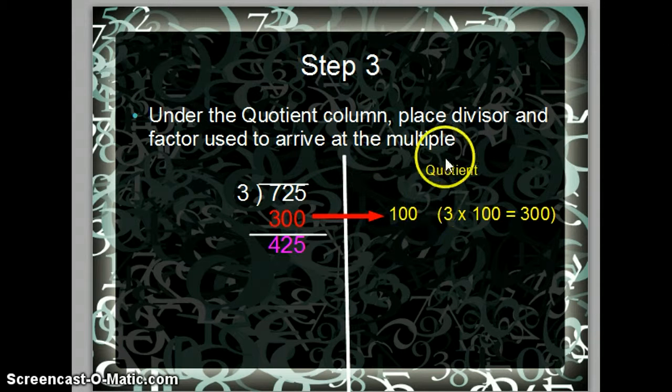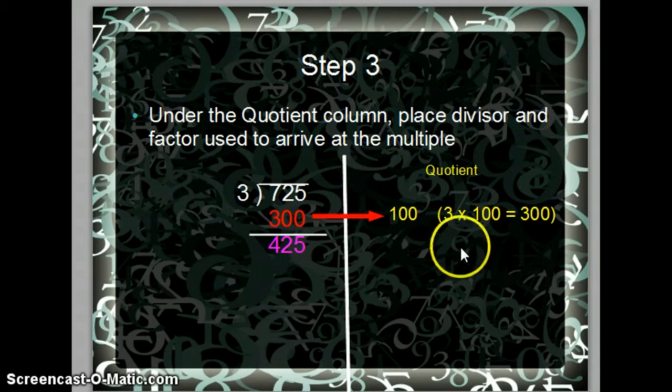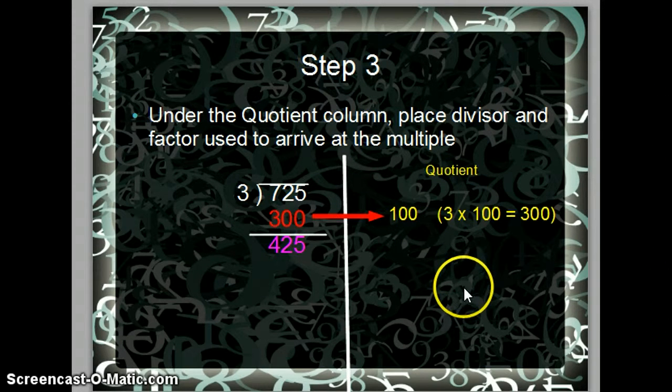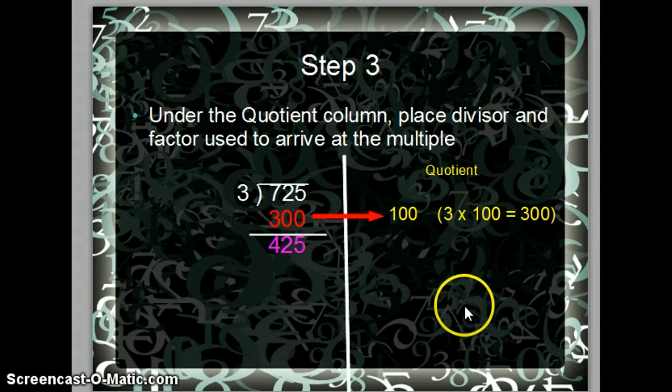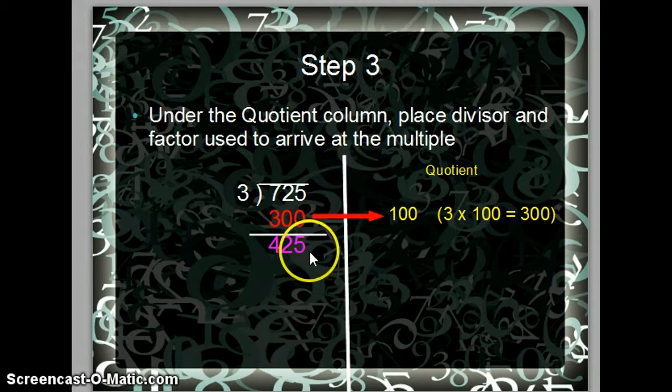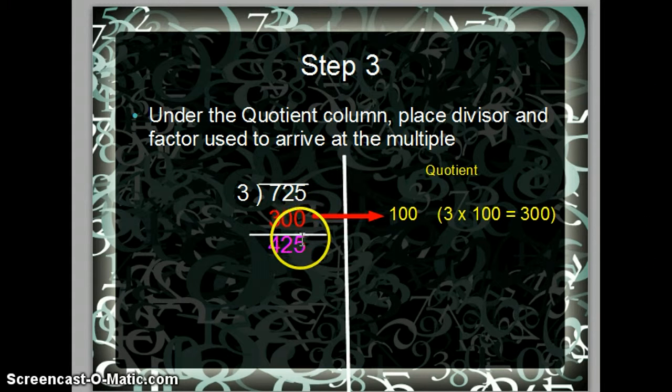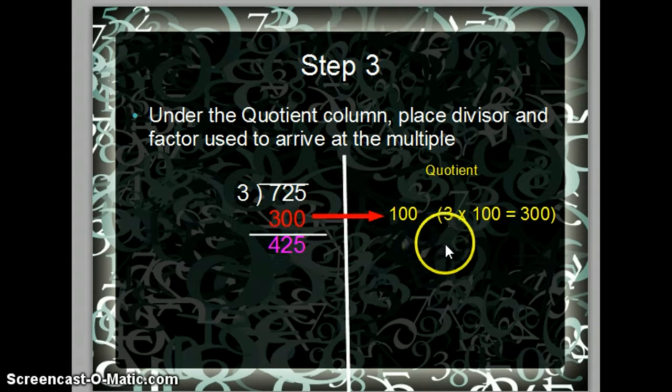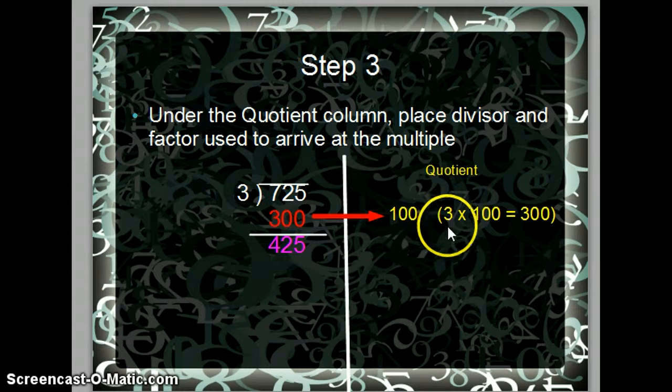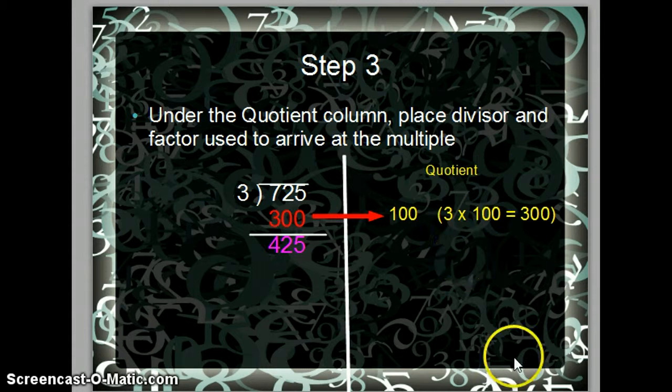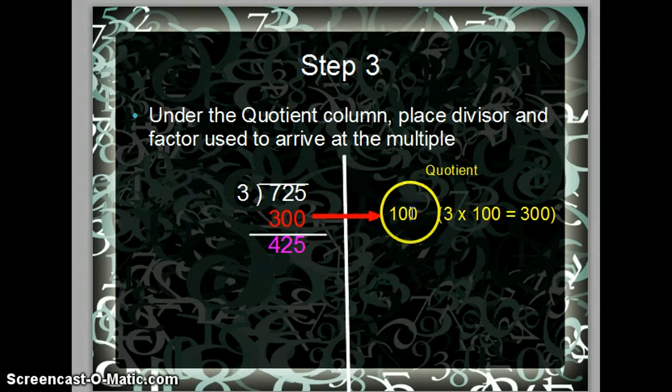Under the quotient column, you want to create a quotient column next to your problem. Place the divisor and the factor used to arrive at the multiple. So the multiple you arrived at was 300. So we arrive at that number by multiplying 3 times 100, which equals 300. So our quotient is 100.